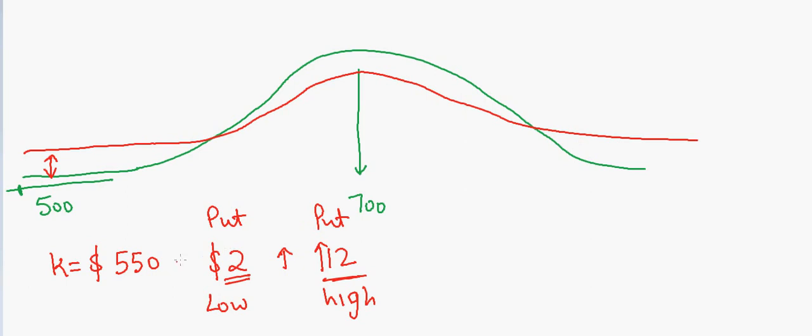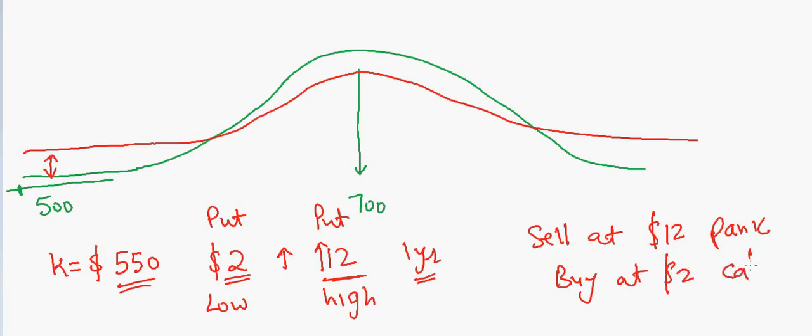When the market is panicked, you can always sell this put at twelve dollars in the panic market, and then you can buy it back at two dollars when everything is calm. So this is how you can invest in volatility again.